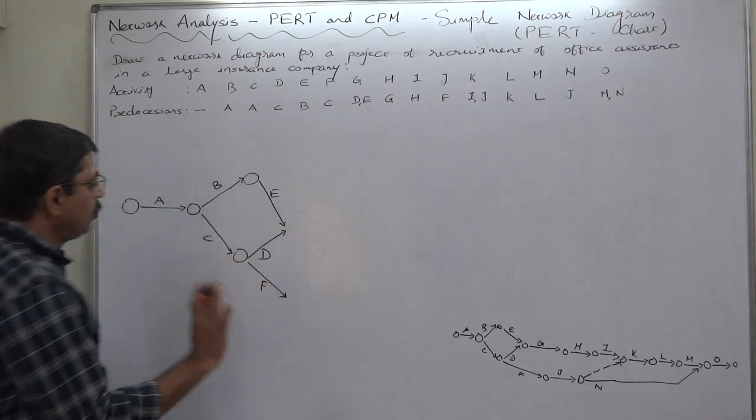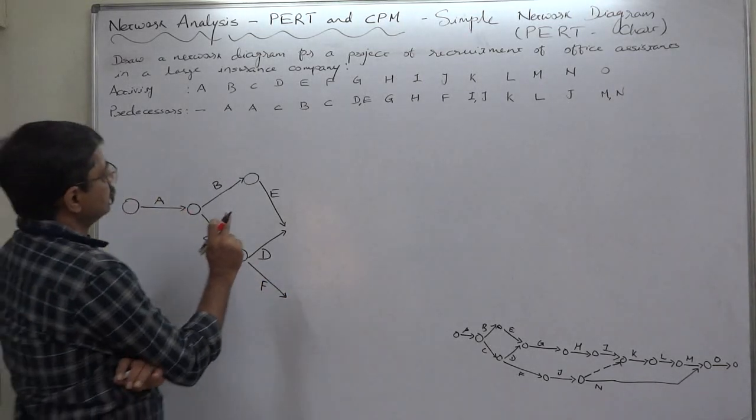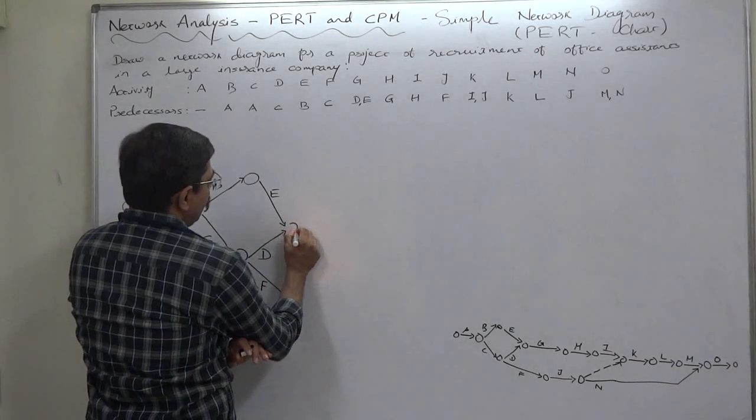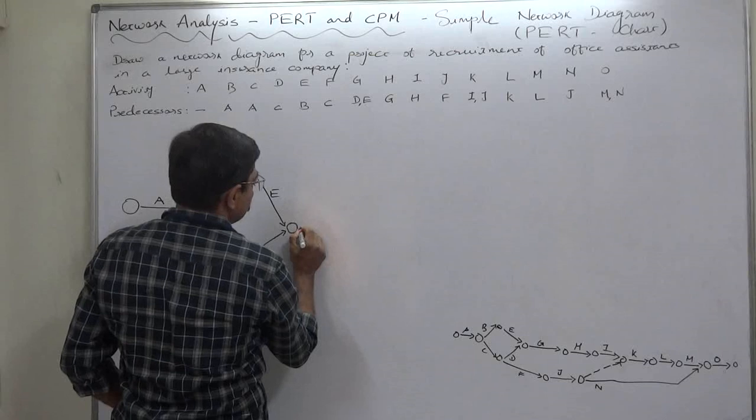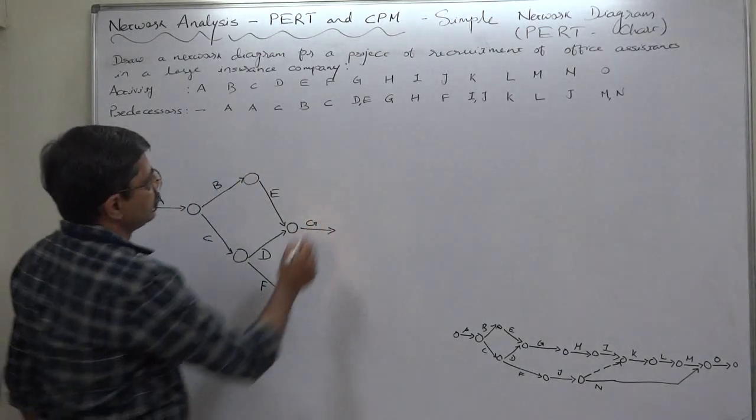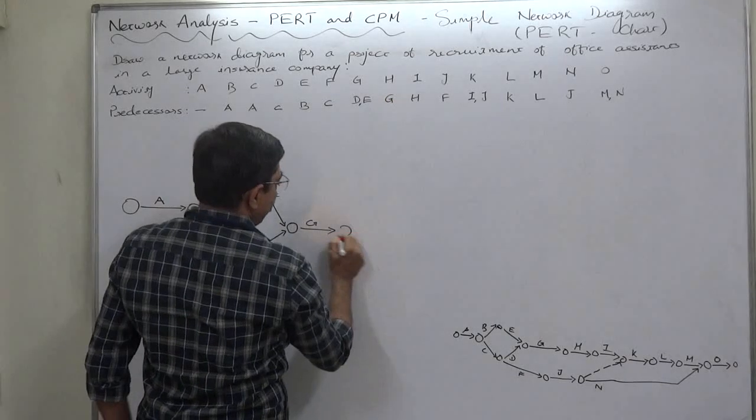Okay, now be careful. D and E are common predecessors of G. Now somewhat easier part: G is predecessor of H only.